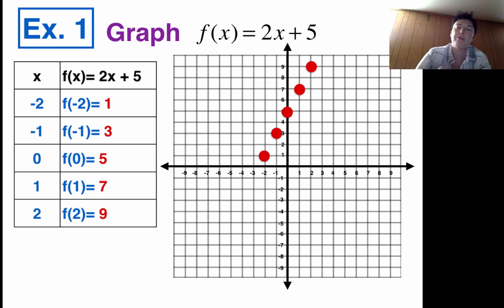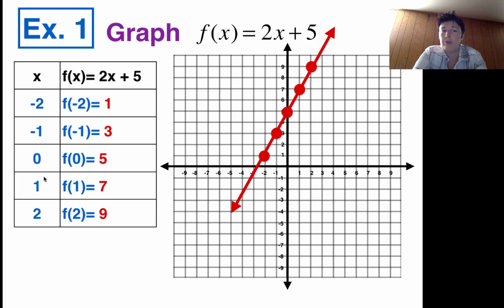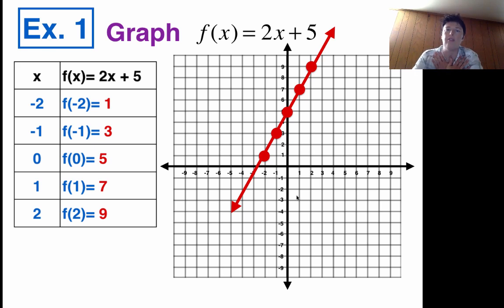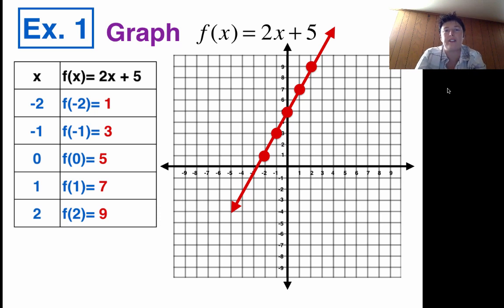I'm pretty sure we could take our ruler, line it up, and connect all our points. I'm going to connect them with a big arrow on top and bottom, because the table was just the numbers I chose. I could have gone 3, 4, 5 and kept on going — this line is going to go forever in both directions. I only got a few points because I only chose to do a few. So I draw the arrows, and I've got the table, the graph, and the equation f(x) = 2x + 5. I just don't have a story problem yet — three of the four.